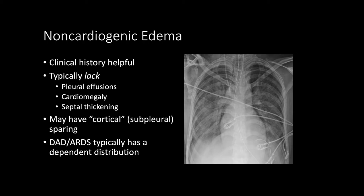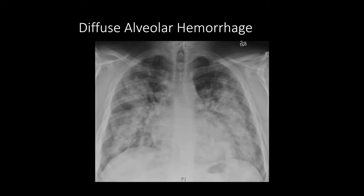In this particular case, the patient had a severe brain injury but no reason to have pulmonary edema, so this was a neurogenic cause of non-cardiogenic edema. Here's another case of a non-cardiogenic edema pattern: bilateral perihilar predominant airspace disease that's symmetric, but in this case we have a normal heart size, no pleural effusions. This turned out to be diffuse alveolar hemorrhage in a patient with Goodpasture syndrome.